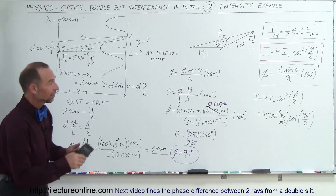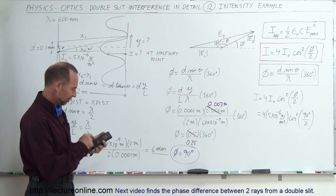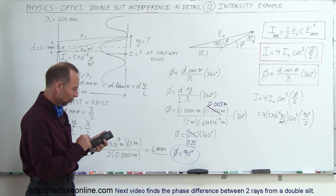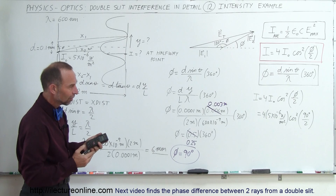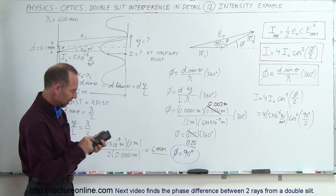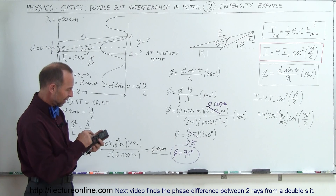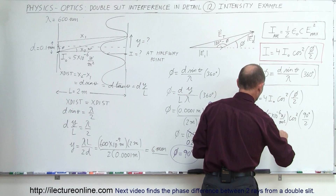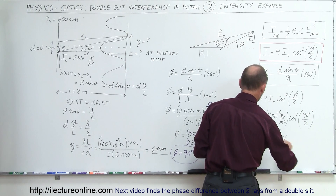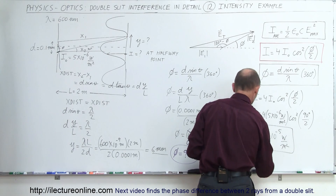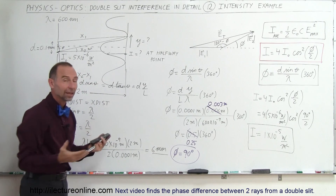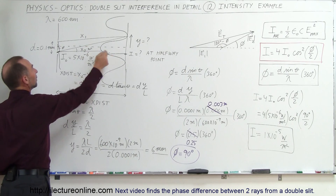With the calculator: 90 degrees divided by 2 is 45 degrees. The cosine of 45 degrees is 0.707; we square that to get 0.5, multiplied by 4 gives 2. So it's 2 times the intensity of a single beam, which is 2 times 5×10⁻⁶, equaling 1 times 10 to the minus 5 watts per square meter. This is the intensity of the light at that location — double the intensity of a single beam.